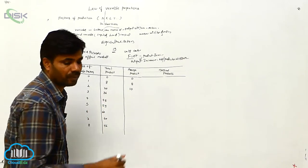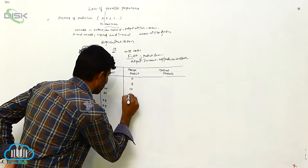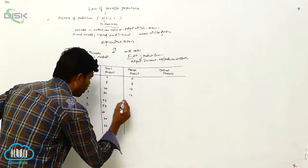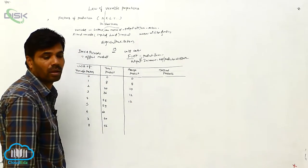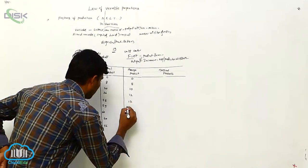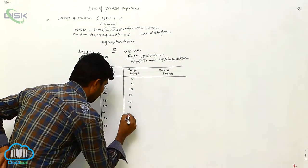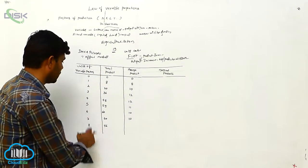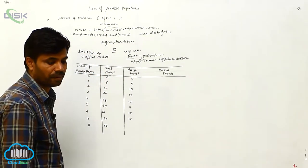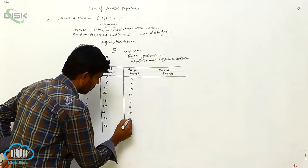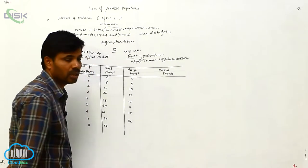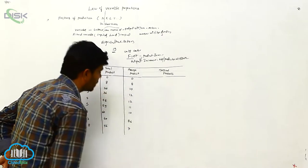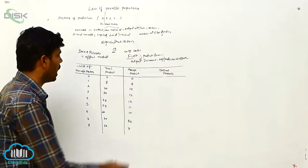36 divided by 3 is 12. 48 divided by 4 is 12. 55 divided by 5 is 11. Next is 10, here also 10. 60 divided by 7 — sorry, 8.6. 56 divided by 8 is 7. These are the averages.